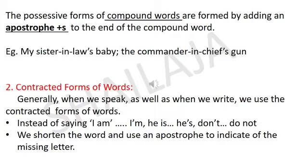Let's go to the contracted forms of words. Generally when we speak as well as when we write, we use the contracted forms of words. What is contracted? A short form — a contraction. We have made it short. Instead of saying 'I am,' we write 'I'm' — I apostrophe M — that's a contracted form or short form.